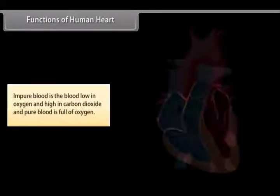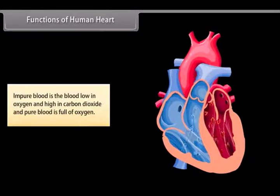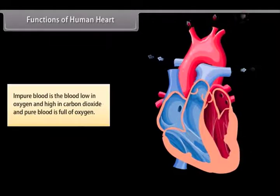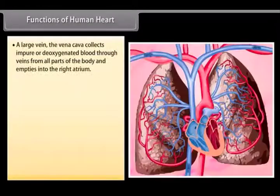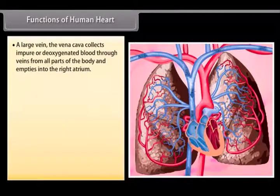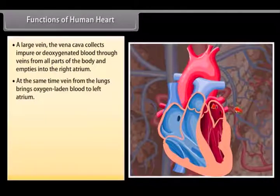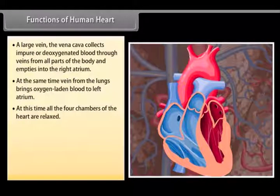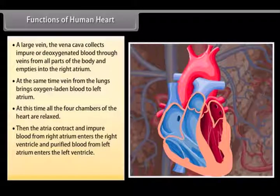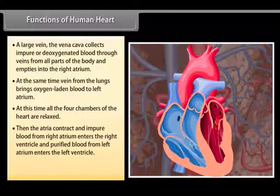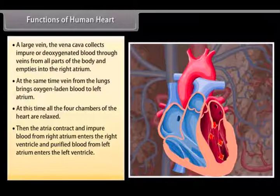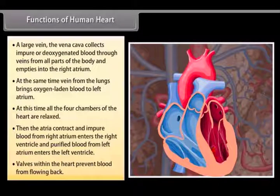Impure blood is blood low in oxygen and high in carbon dioxide, while pure blood is full of oxygen. The large vein, the vena cava, collects deoxygenated blood from all parts of the body and empties it into the right atrium. At the same time, a vein from the lungs brings oxygen-laden blood to the left atrium. When all four chambers are relaxed, the atria contract: impure blood from the right atrium enters the right ventricle and purified blood from the left atrium enters the left ventricle. Valves within the heart prevent blood from flowing back.